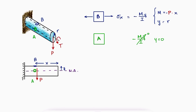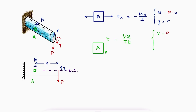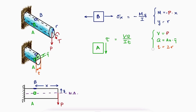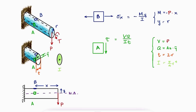Stress element a is instead subjected to a transverse shear caused by the shear force P. V would be equal to P. Q can be obtained by multiplying the shaded area of the semicircle above a times the distance from the neutral axis to the centroid of that semicircle, and t is the thickness of the rod at the point where we are trying to calculate the shearing stress, which is the center of the rod, and therefore t is equal to the diameter of the rod. The second moment of area I would be that of the whole circle, not just the semicircle, and it applies both to the shearing stress of a and the normal bending stress of b.